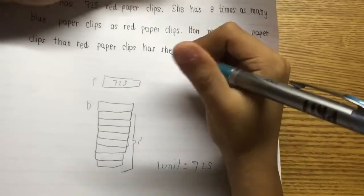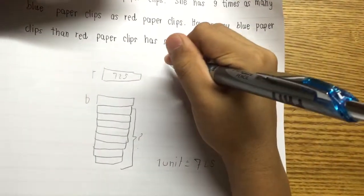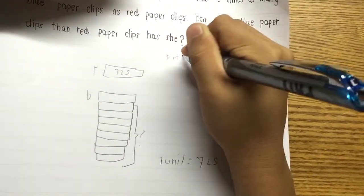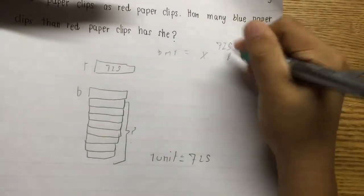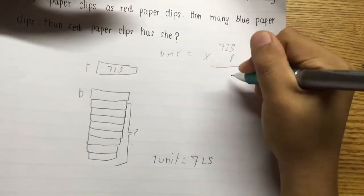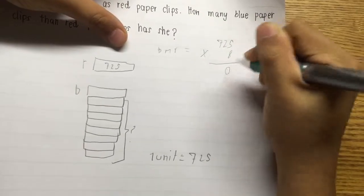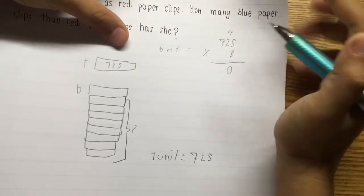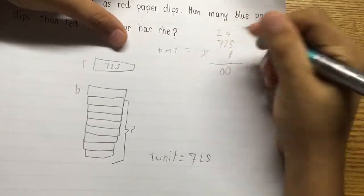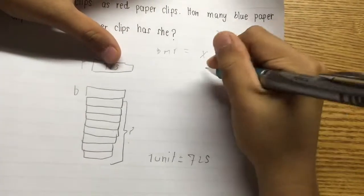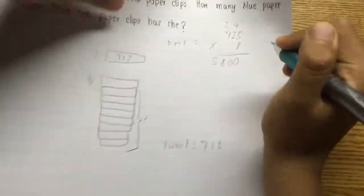So, we know the blue more than red equals this one. So, 5,800.